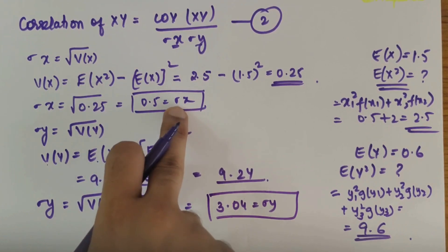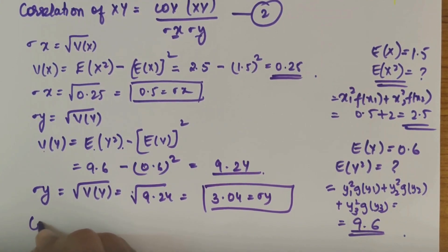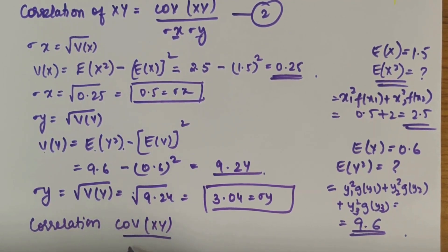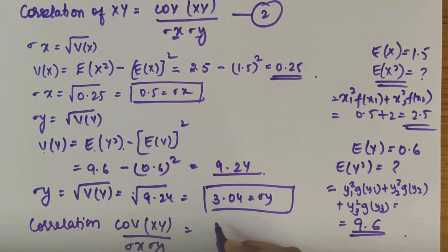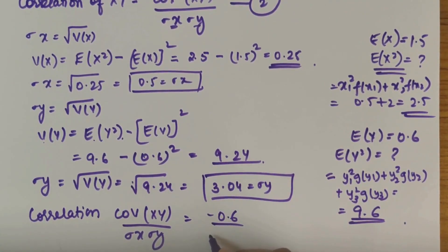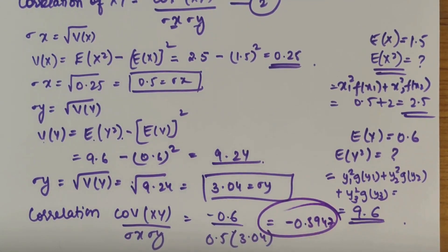We have calculated sigma x and sigma y, so substituting in the second equation: Correlation = Cov(x, y) divided by sigma x into sigma y, that is minus 0.6 divided by 0.5 into 3.04. If you solve this you get minus 0.3947. So this is the correlation value. I hope you have understood how to solve this numerical. If you have any doubts, do let me know in the comments, and subscribe to my channel. Thank you.